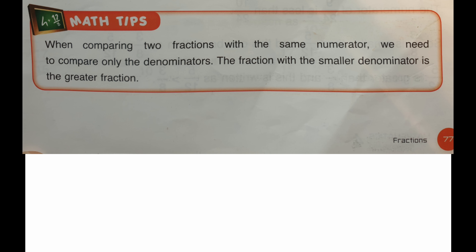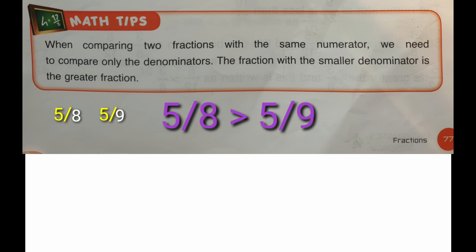We notice that when comparing two fractions with the same numerator, we need to compare only the denominators. The fraction with a smaller denominator is the greater fraction. For example, if five is the same numerator and the denominators are eight and nine respectively, since eight is smaller than nine, five eighths is greater than five ninths.